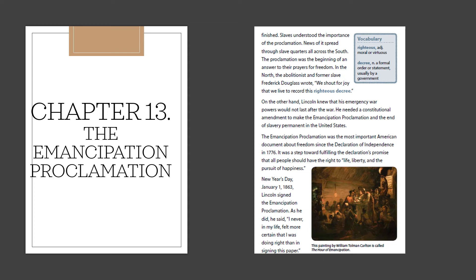In the North, abolitionist and former slave Frederick Douglass wrote in praise of the Proclamation. On the other hand, Lincoln knew that his emergency war powers would not last after the war. He needed a constitutional amendment to make the Emancipation Proclamation and the end of slavery permanent in the United States. The Emancipation Proclamation was the most important American document about freedom since the Declaration of Independence in 1776. It was a step forward, fulfilling the Declaration's promise that all people should have the right to life, liberty, and the pursuit of happiness.